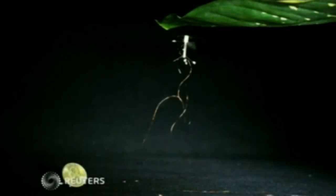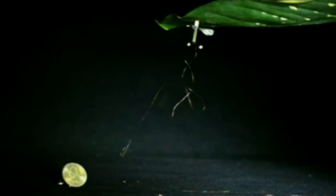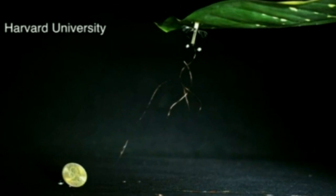Robo-bees have been upgraded. The tiny insect robots are now capable of perching like a bat to save energy.